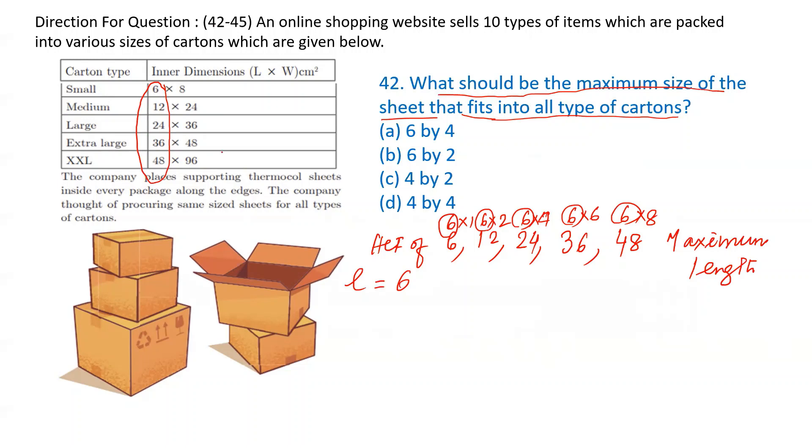Now coming to breadth, you will take the HCF of 8, 24, 36, 48, 96. So it will be 4 times 2, 4 times 6, 4 times 9, 4 times 12, 4 times 24. So this is the common factor, highest common factor. So breadth is equal to 4. So it must be 6 by 4.